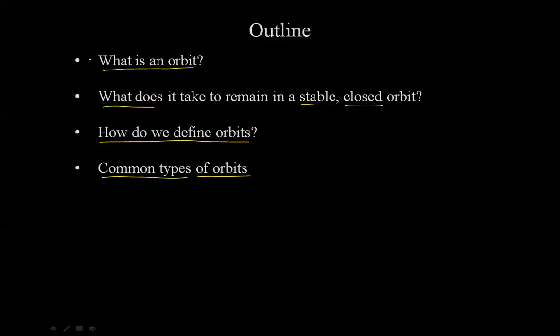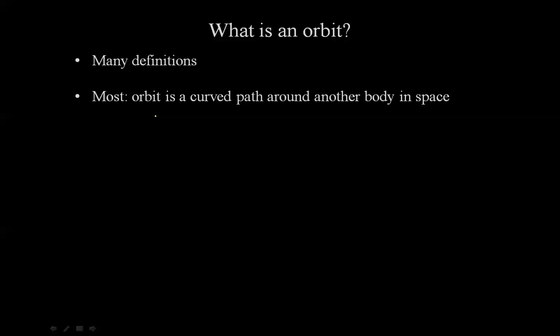What is an orbit? If you were to google this exact phrase, what is an orbit, the most commonly found definition that you will get online or in a textbook that is not an orbital mechanics textbook is that an orbit is a curved path around another body in space. It is very simple, but not very accurate.